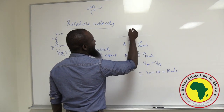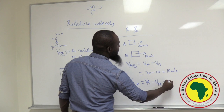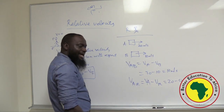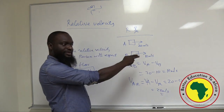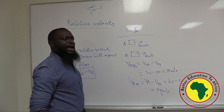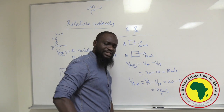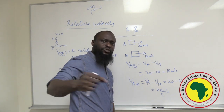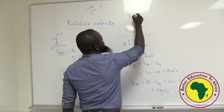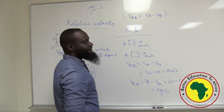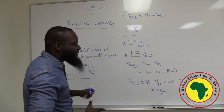But what if somebody is by the roadside? Call the person R. What is the velocity of A with respect to R? It's V-A minus V-R. V-A is 20, V-R is zero because the person is standing static. That person will see A move with 20 meters per second, which is correct. But if somebody is moving with 20 meters per second and you are also moving with 20 meters per second, both of you will think you are together — your relative speed will be zero. So V-AB equals V-A minus V-B.